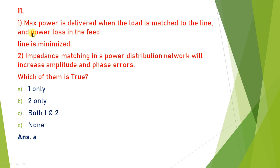Next: two statements are given. Statement 1: maximum power is delivered when the load is matched to the line and power loss in the feed line is minimized. Statement 2: impedance matching in a power distribution line increases the amplitude and phase error. Statement 2 is wrong — impedance matching decreases the error, not increases it. Statement 1 is correct by the maximum power transfer theorem (ZL = Z0). So only statement 1 is right — answer is (a).